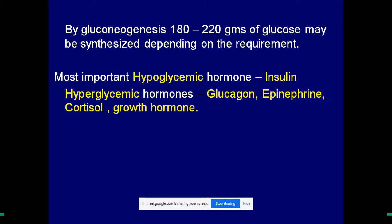Blood glucose is like petrol for our body. It undergoes oxidation by the glycolysis pathway and the citric acid cycle, yielding energy to the body cells. This is the major energy supply to body cells. Maintenance of blood glucose at a normal range is a very difficult task, and that is what we are going to study in this topic.